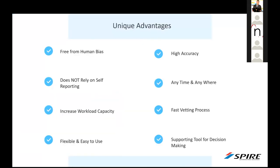The unique advantages of using LVA in HR include: eliminating human bias, high accuracy, no reliance on self-reporting, and availability anytime and anywhere as software installed on your computer or laptop. It offers a fast vetting process, is flexible and easy to use, and you get the report immediately after the test. It works as a supporting tool for decision-making — whether you're doing a polygraph or BIOS in an investigation, or personality profiling of an employee — helping you identify where the red zone and green zone are and allowing follow-up interviews after the report.